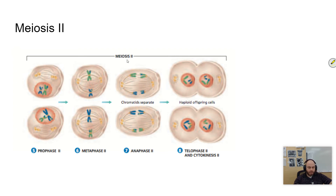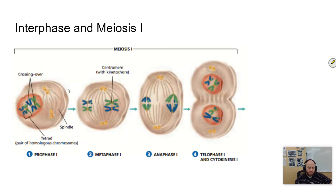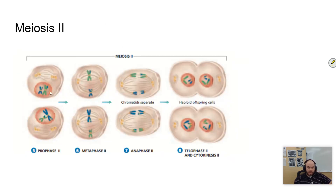Moving on to meiosis II: you have those two cells that both have doubled copies. Nothing special in prophase this time; metaphase they line up in the middle. In anaphase II, sister chromatids are going to separate. Those individual pieces separate — and they're not necessarily identical as in mitosis, because of something called crossing over that happens during prophase I, which we'll cover in the next video. Each cell gets a copy of each chromosome, ending with four haploid cells, each with 23 chromosomes in a human cell.